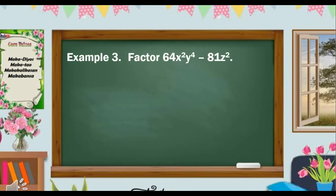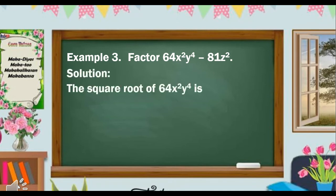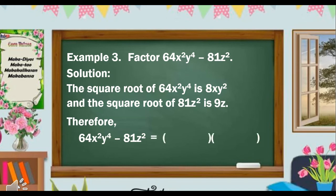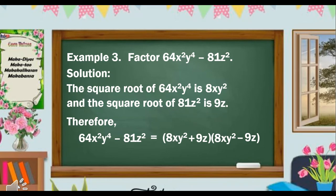Example 3: factor 64x squared y to the fourth minus 81z squared. Since the given falls within our pattern, we will now start factoring. The square root of 64x squared y to the fourth is 8xy squared, and the square root of 81z squared is 9z. Therefore, 64x squared y to the fourth minus 81z squared is equal to (8xy squared plus 9z) multiplied by (8xy squared minus 9z).